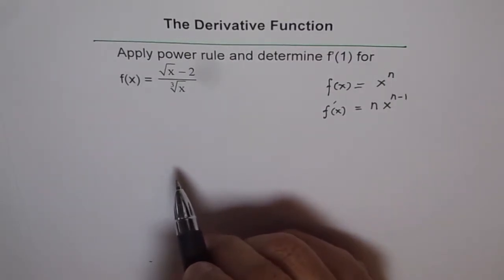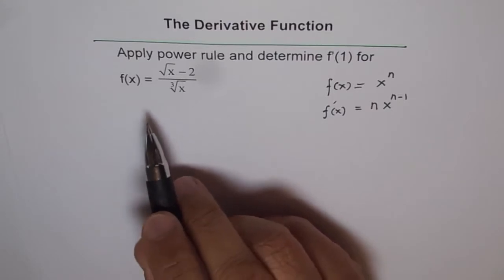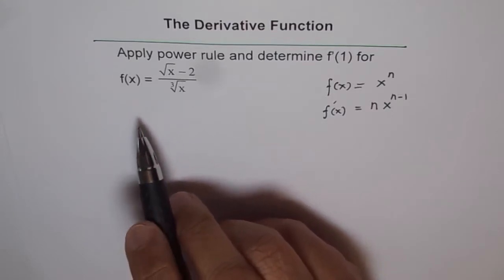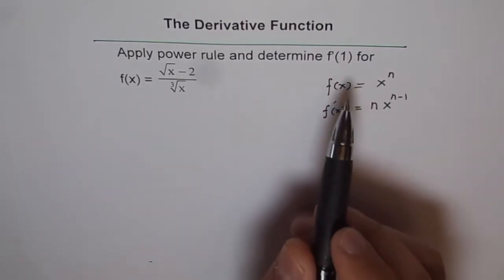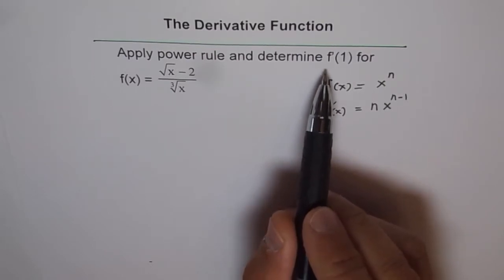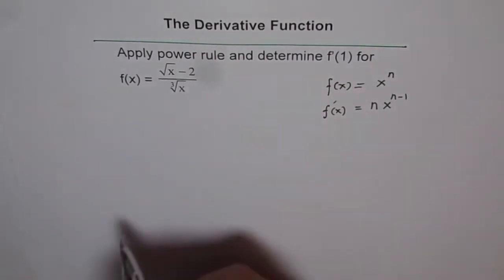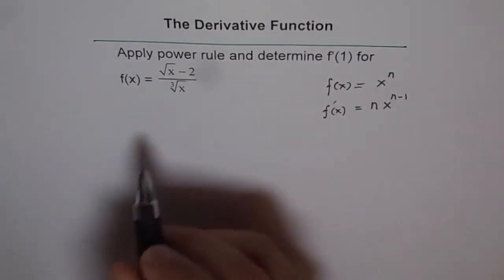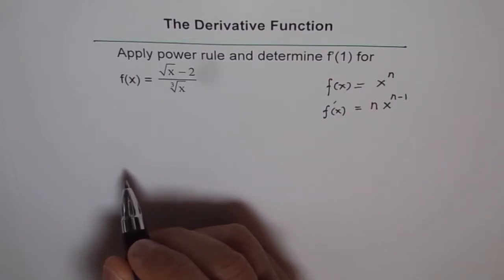As a first step, we will find the derivative of the function and then substitute x equals 1 to find the derivative at that point. If you have an equation like this, it is a good idea to simplify it first and then apply the power rule.